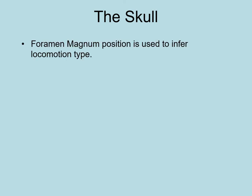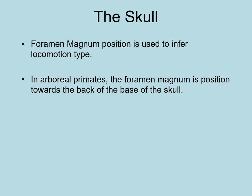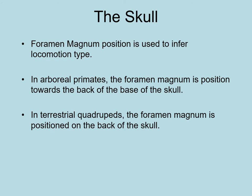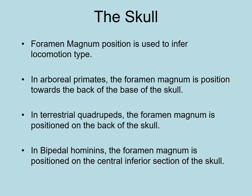The foramen magnum — the large hole in the bottom of the skull — is used to infer locomotion type. In arboreal primates, it's positioned towards the back of the base of the skull. In terrestrial quadrupeds, it's on the actual back of the skull. In bipedal hominins, the foramen magnum is positioned on the central inferior section of the skull — basically smack dab in the middle.